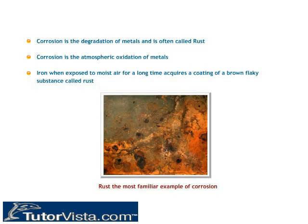Corrosion is the atmospheric oxidation of metals. By far, the most important form of corrosion is the rusting of iron. Rusting is essentially a process of oxidation in which iron combines with water and oxygen to form rust — the reddish-brown crust that forms on the surface of iron. This type of damage typically produces oxides and/or salts of the original metal.